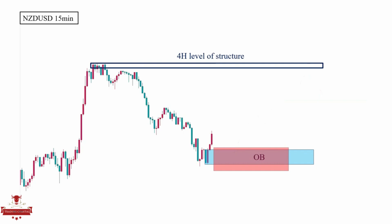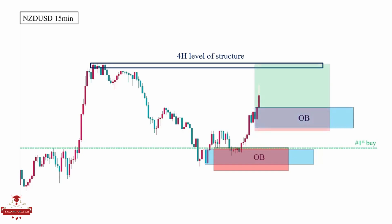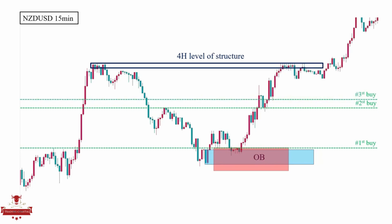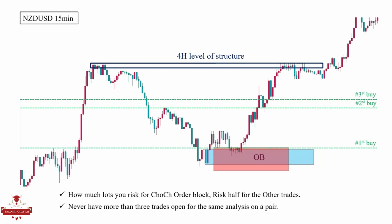But that is not all. We can look for further entries as the market continues to go to the upside. Every time the market makes another order block, we could place a new order with lower risk. For example, notice how the market has created a new order block here — so we set another order. Again, we have another order block, so we place another one. But this is optional, and never try it before backtesting enough and gaining the required confidence. Also, keep in mind that whatever position size you risk for the change of character's order block, you need to risk half of that size for the following trades. Never have more than three trades open for the same analysis on a pair. For example, if you have a small account and are willing to risk 2% for the first trade, risk 1% for the second and third. This way, in the worst case scenario, you will only lose 4% of your capital — but in the best cases, you will earn far more profits, which is how you make a smart risk.